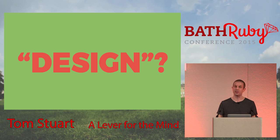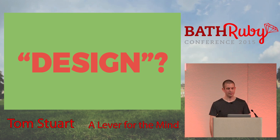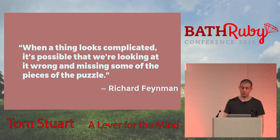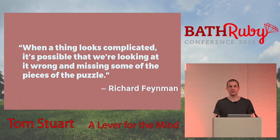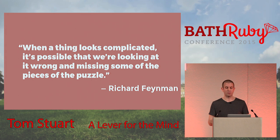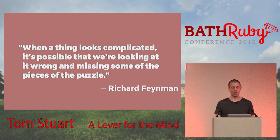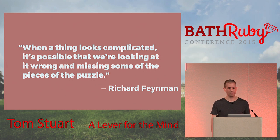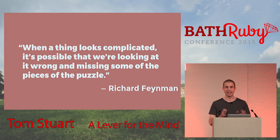I watched a documentary recently where Richard Feynman said: when a thing looks complicated, it's possible that we're looking at it wrong and missing some of the pieces of the puzzle. He was talking about particle physics — a classic example of this. Real experiments produce lots of complex-looking results, and the challenge is to find the elegant abstract model that predicts them. To a lesser degree, we have the same problem when making software, cooking a meal, writing a novel, or understanding someone else's feelings. We need abstractions to take apart complex things from the real world and reconstruct them in our heads so that we can get some purchase on them.